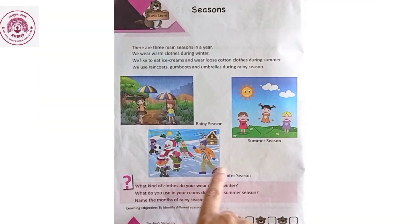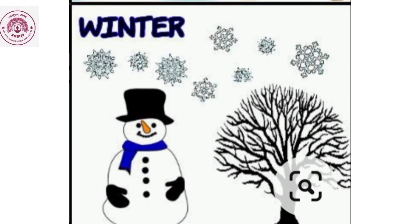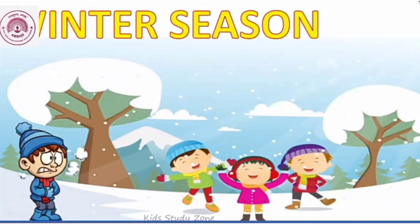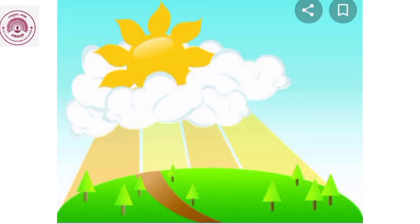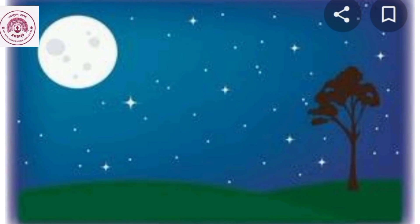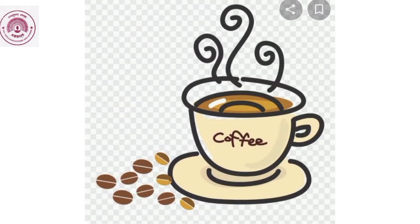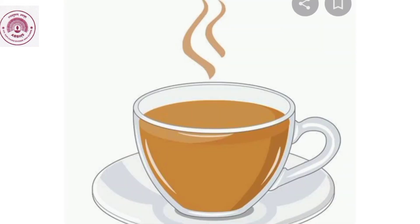Winter season. Winter season is the coldest season of the year. It is very cold in winter season. It begins from the month of November and lasts till the month of February. It comes after the rainy season. In this season, the days are shorter and nights are longer. During winter, we wear woolen clothes to keep ourselves warm, like jacket, socks, cap, and muffler. We like to have hot food during winter season like coffee, tea, and soup.